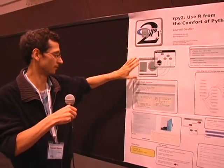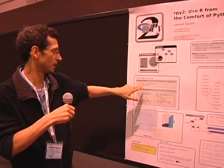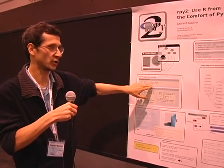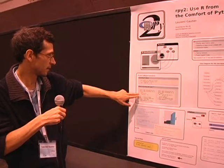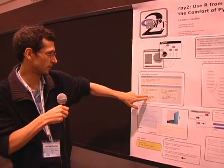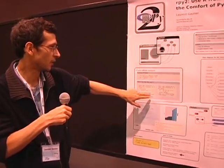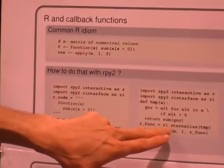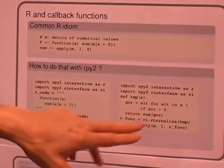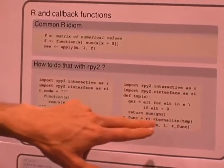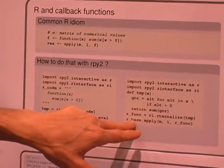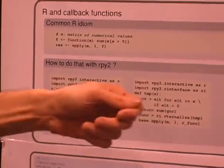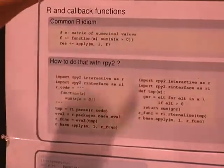This is an idiom used very often in R, where one would say apply to a matrix M across all rows function F. So in that case, with RPy2, you write the R function and parse it and evaluate it, or here you define your callback function in Python and have this magic function called R-ternalize. It's a pun on internalize and R-ternalize. It's internalized to R. And you can apply that. This is Python code, and you pass a Python function that has been R-ternalized to R. So R will callback Python from itself.